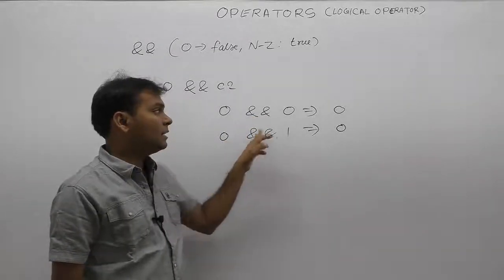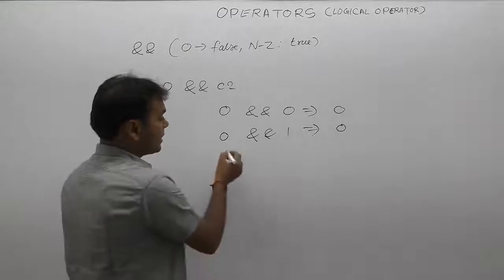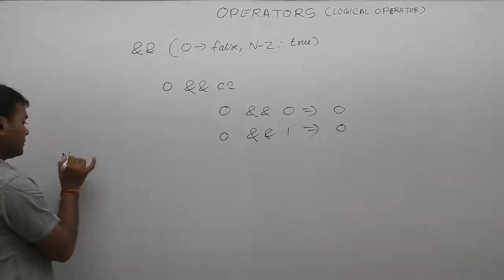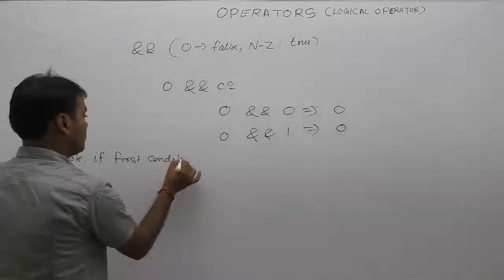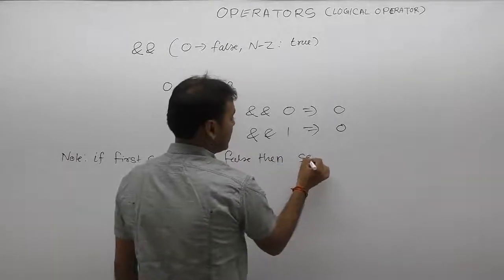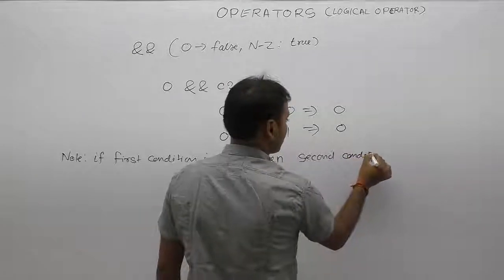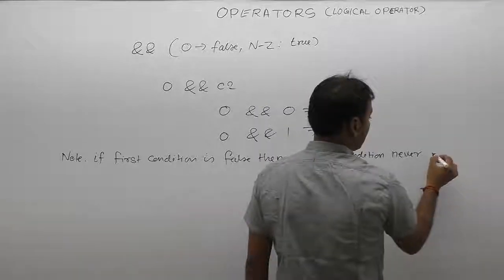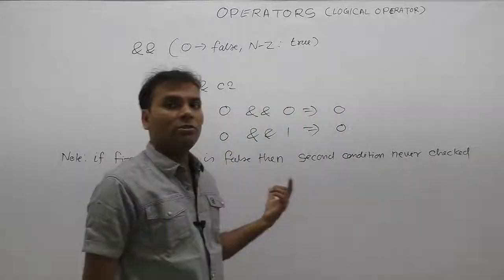In the case of logical AND, if the first condition is false, then the result is one hundred percent false. The key point is: if the first condition is false, the second condition is never checked — it is never evaluated.